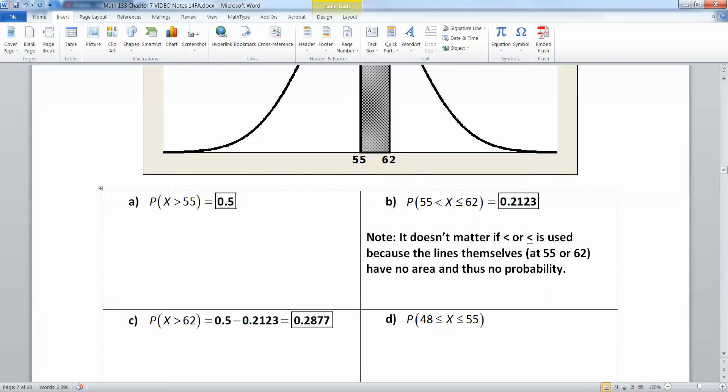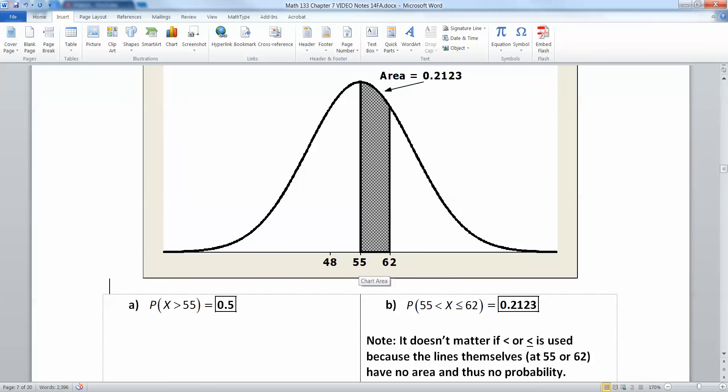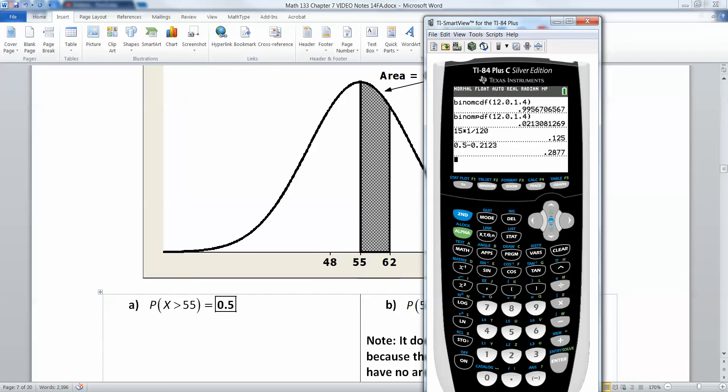Now what about 48 to 55? Let me put in 48. Notice I didn't do this for no reason. 55 to 62 is seven away, and then 48 to 55 is also seven away. That's why I picked the number 48 in the first place for this problem.